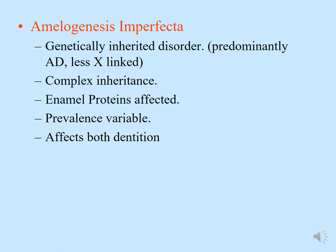Amelogenesis imperfecta is a genetically inherited disorder. The gene is predominantly autosomal dominant and shows complex inheritance. Enamel proteins such as amelogenin, tuftelin, and others are affected; the defect in the gene leads to abnormal protein formation, causing a fault in the maturation and calcification of enamel. The prevalence is variable and affects both dentitions. The amelogenin gene is found on both the X and Y chromosomes, but that on the X chromosome accounts for about 90% of RNA transcription. The enamel proteins involved include ameloblastin, enamelin, and tuftelin.